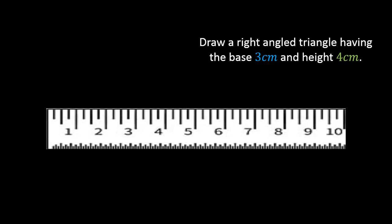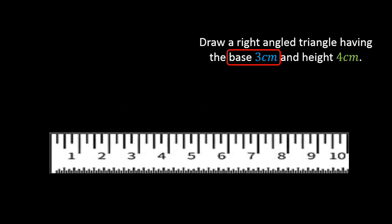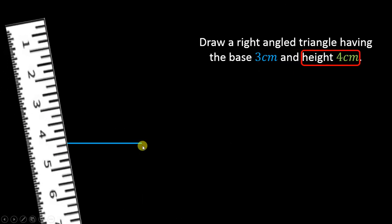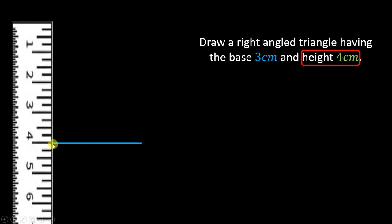You don't need anything else for this assignment — just a scale or ruler to draw the dimensions. First, draw the base which is 3 cm. Simply keep the ruler and draw the line — this is the base. Then measure the height of 4 cm. Keep the scale vertically and draw a line of 4 cm. Now it has become the height of the triangle.